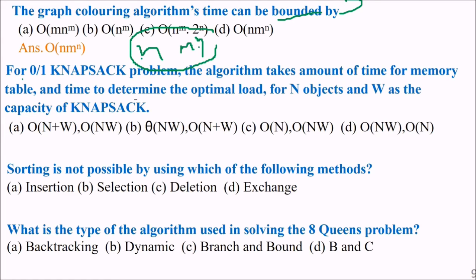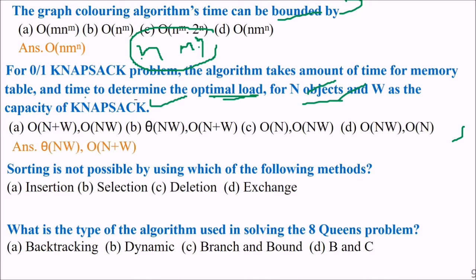For the zero-one knapsack problem, the algorithm takes a certain amount of time for the memory table and for determining the optimal load for n objects with capacity w. The answer is: first, theta of n times w for the memory table, and second, order of n for determining the optimal load.